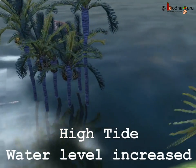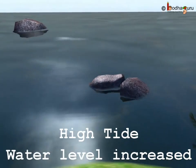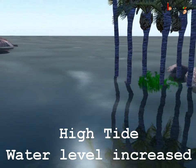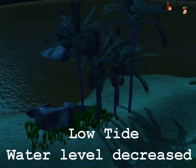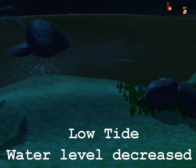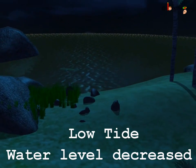As you can see, the tree and the rock are now covered with water which was not there before. And when the low tide occurs, the water level reduces. As you can see, the water level is much below the tree and the rock now.